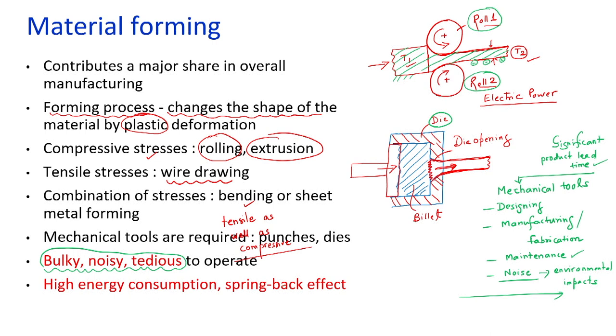Moreover, mechanical tools may generate some sort of spring back — there may be recovery due to elastic deformation of some materials, and that spring back effect will certainly affect the product quality. For example, during bending it may be desired to get about 30 degrees of bend angle, but due to the spring back effect we may only achieve 28 degrees. If the product is intended for a precision application, it is essential to achieve exactly 30 degrees, which is not possible by using mechanical bending. To resolve this issue and achieve exactness in deformation, we can use advanced techniques such as laser-based energy application.